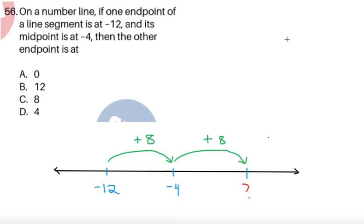Last item, number 56. On the number line, if one endpoint of a line segment is at negative 12, as seen here, and its midpoint is at negative 4, as seen here, then the other endpoint is at somewhere. We have four options here. It's very nice that we have a number line here for reference. If we can try to draw, then it would be nice since there's a visual representation for us. One endpoint is at negative 12, which is to the left of the midpoint given.